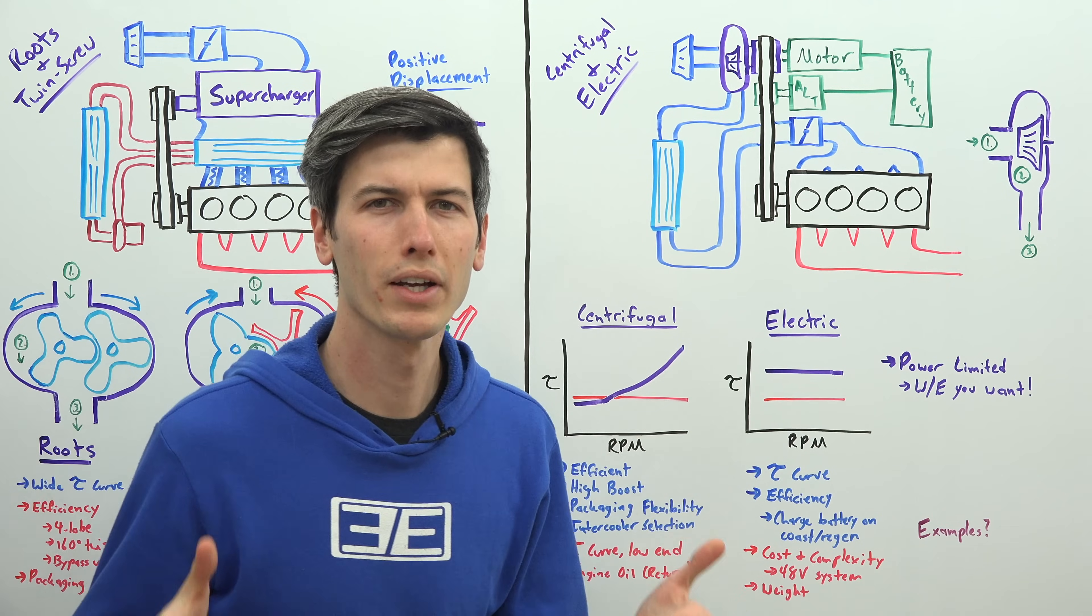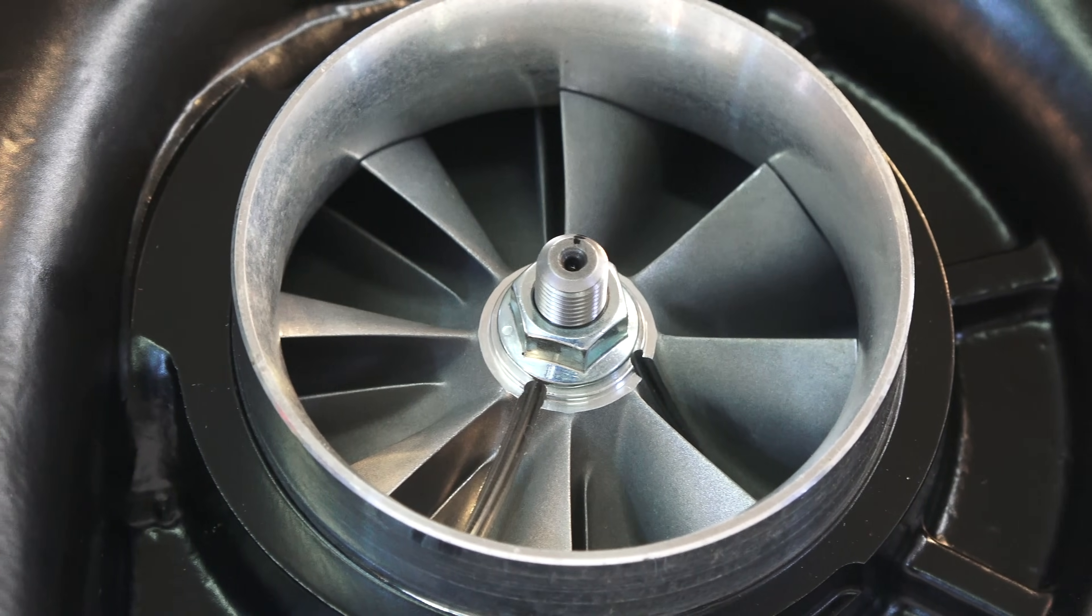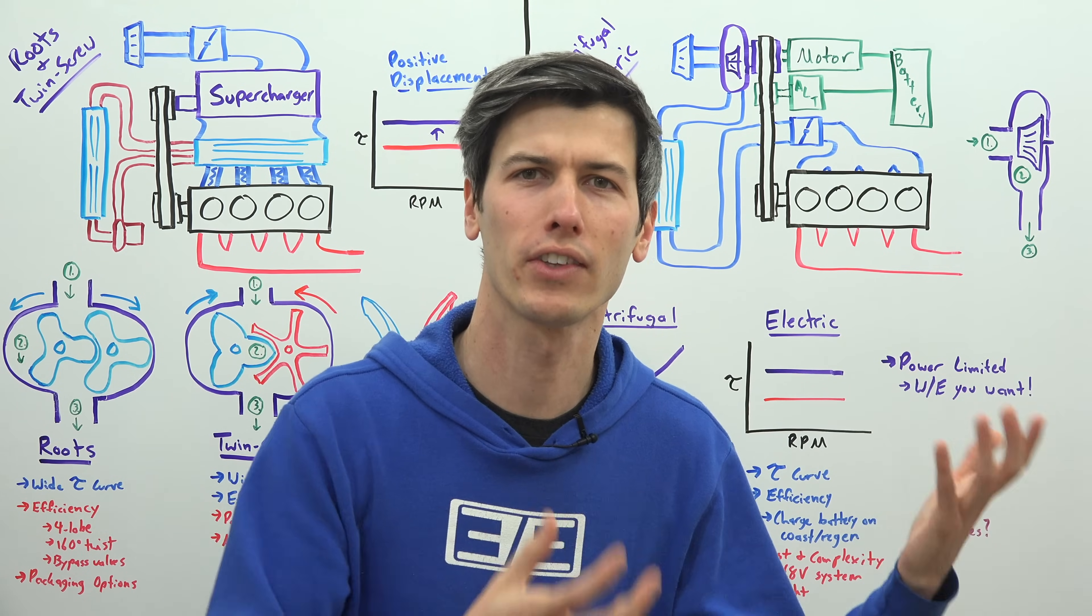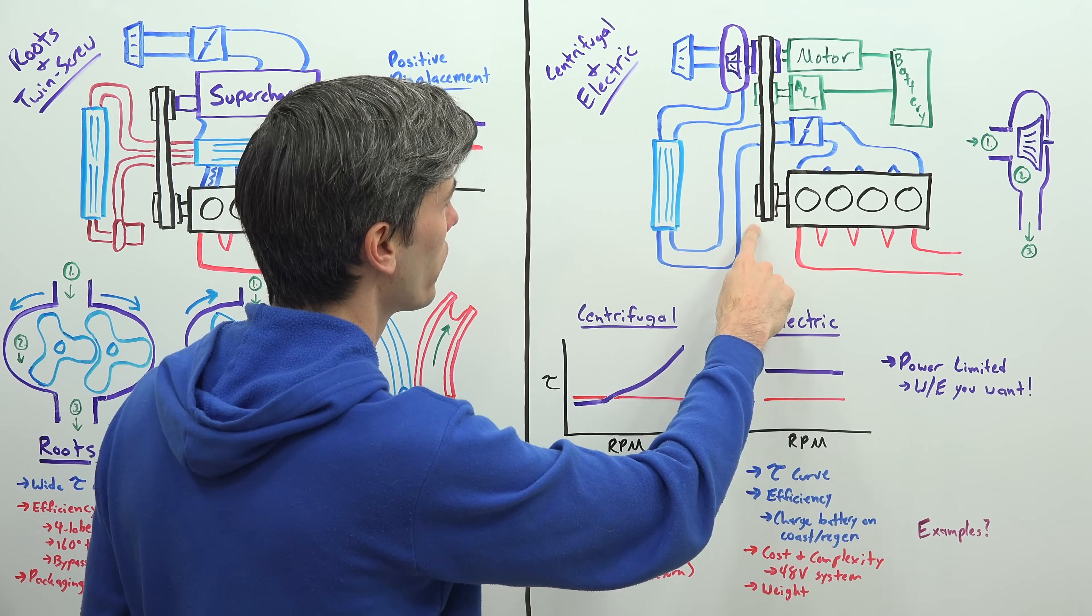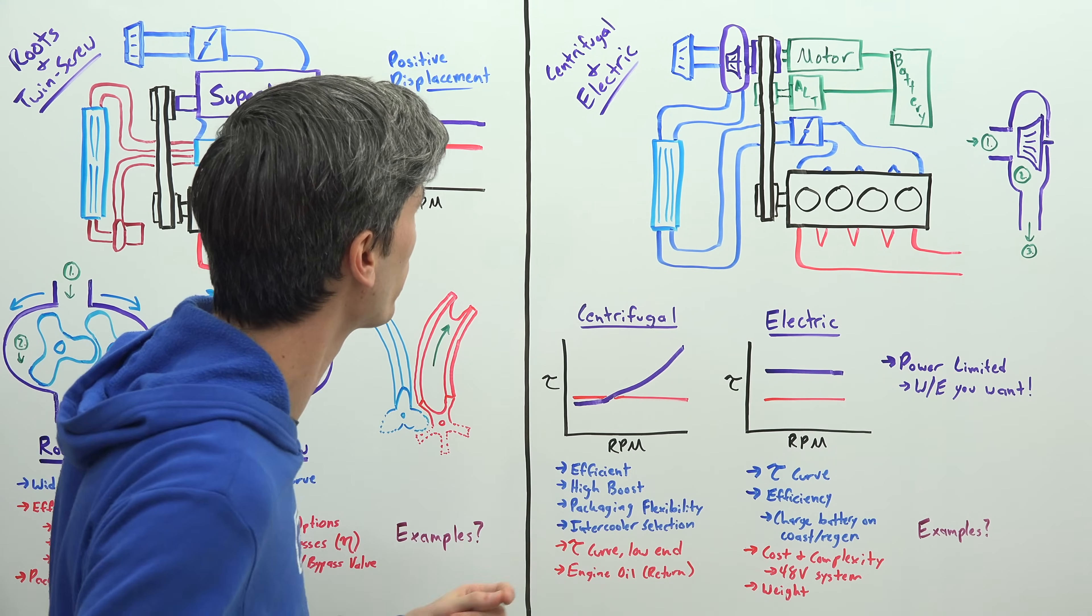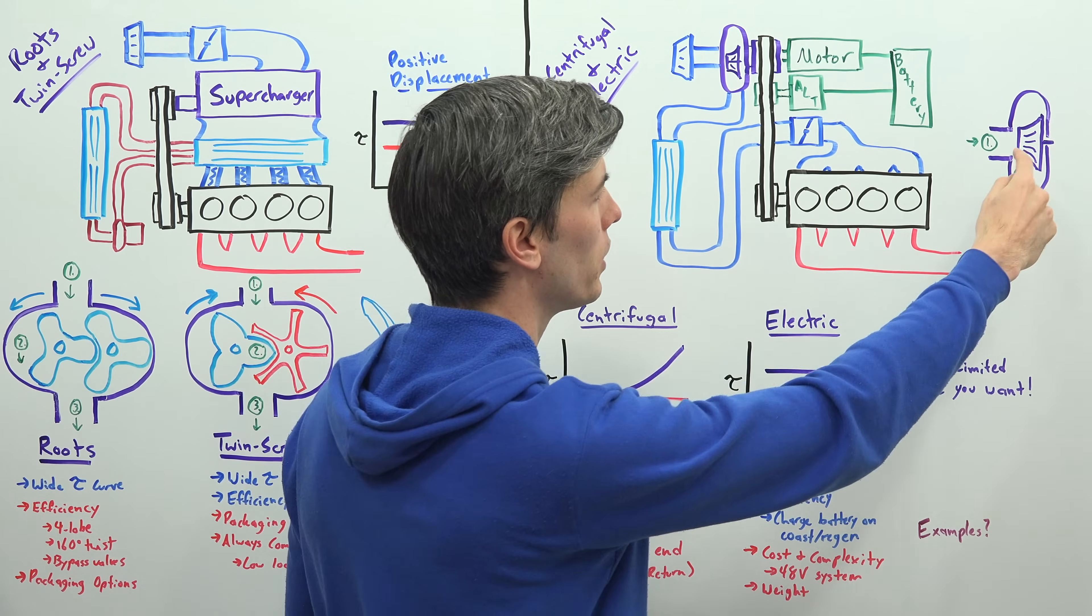Moving on to centrifugal and electric style superchargers. These are a lot like turbochargers except instead of having the exhaust gases drive the compressor, now you either have an electric motor doing it or it is driven off of an engine belt. And so here we're looking at the overall diagram, but again that basic concept of simply using an impeller which is either driven by the engine or driven by an electric motor.